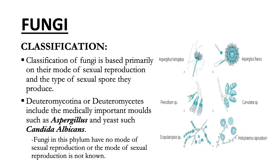The taxonomic classification of fungi has undergone significant changes, but one current classification divides the Kingdom Fungi into five phyla, based primarily on their mode of sexual reproduction. One classification scheme contains a phylum called Deuteromycotina, or Deuteromycetes, that includes the medically important molds such as Aspergillus and the yeast such as Candida albicans. Fungi in this phylum have no known mode of sexual reproduction.